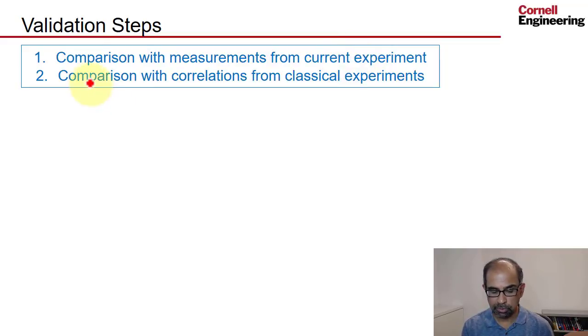One could also do comparisons with correlations and classical experiments. This is a very well studied problem and there are correlations for the friction factor and the Nusselt number versus Reynolds number and also the Prandtl number. I'll show you my results from comparisons to the current experiment.